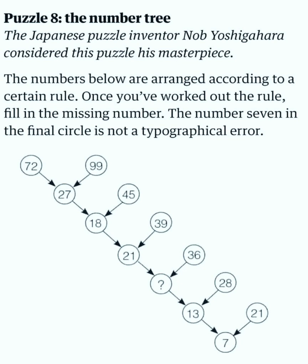puzzle inventor, Nob Yoshigahara, considered this puzzle his masterpiece. The numbers are arranged according to a certain rule. Once you've worked out the rule, fill in the missing number. The number seven in the final circle is not a typographical error. So you have to tell, what will be the question mark after 21?